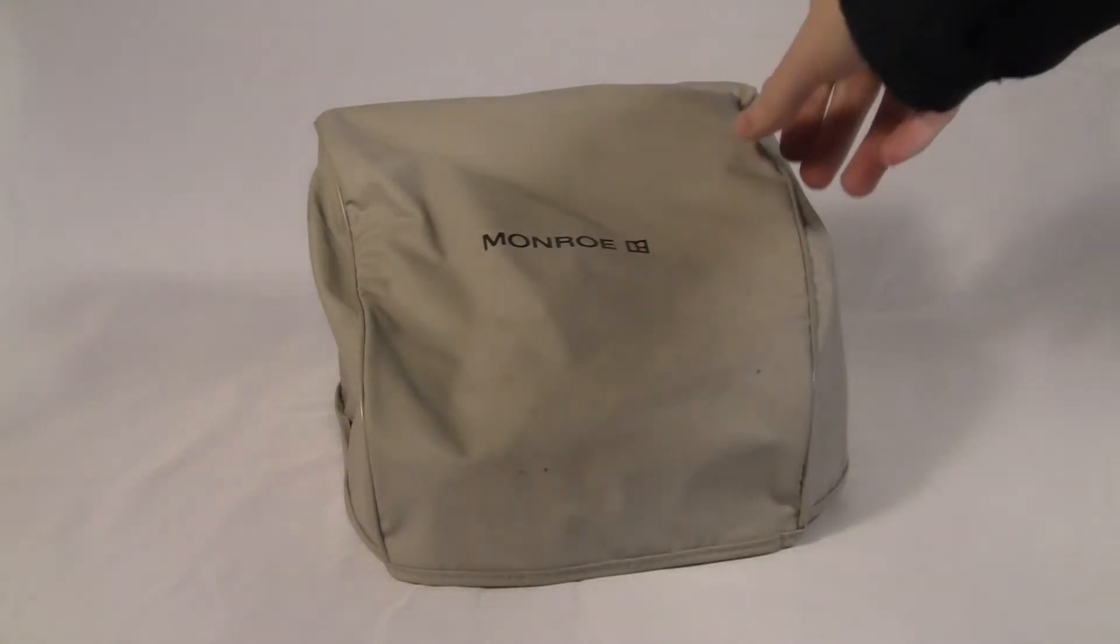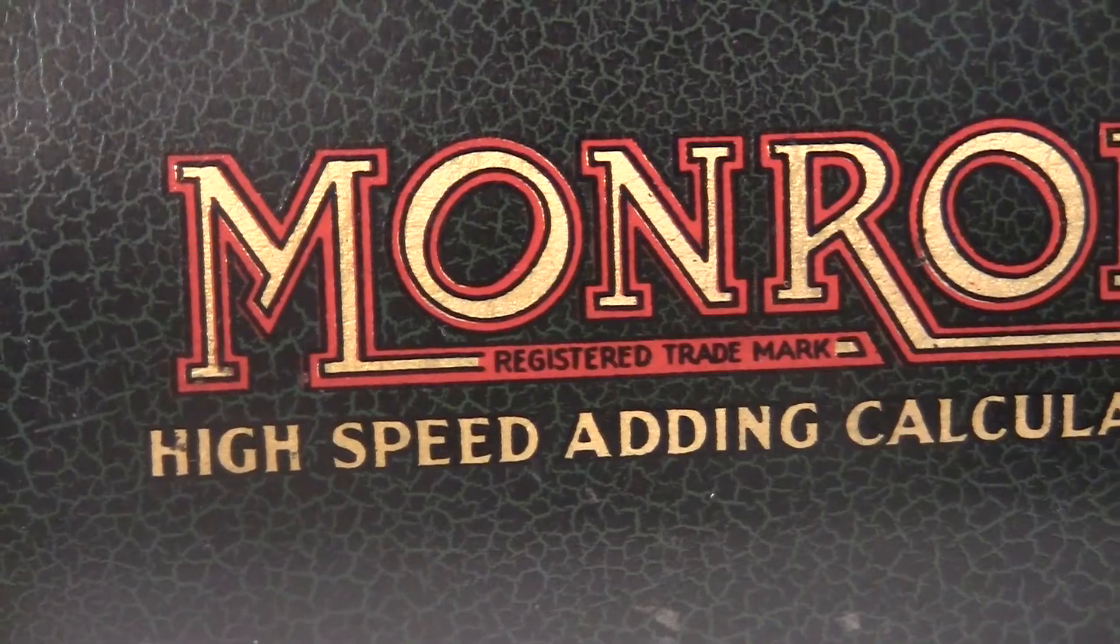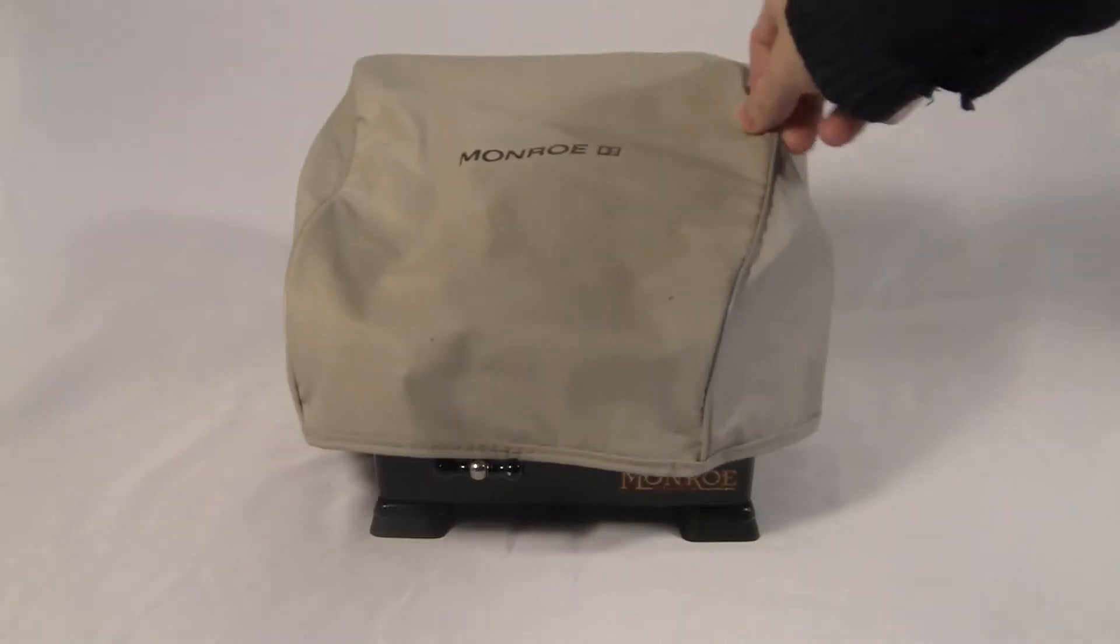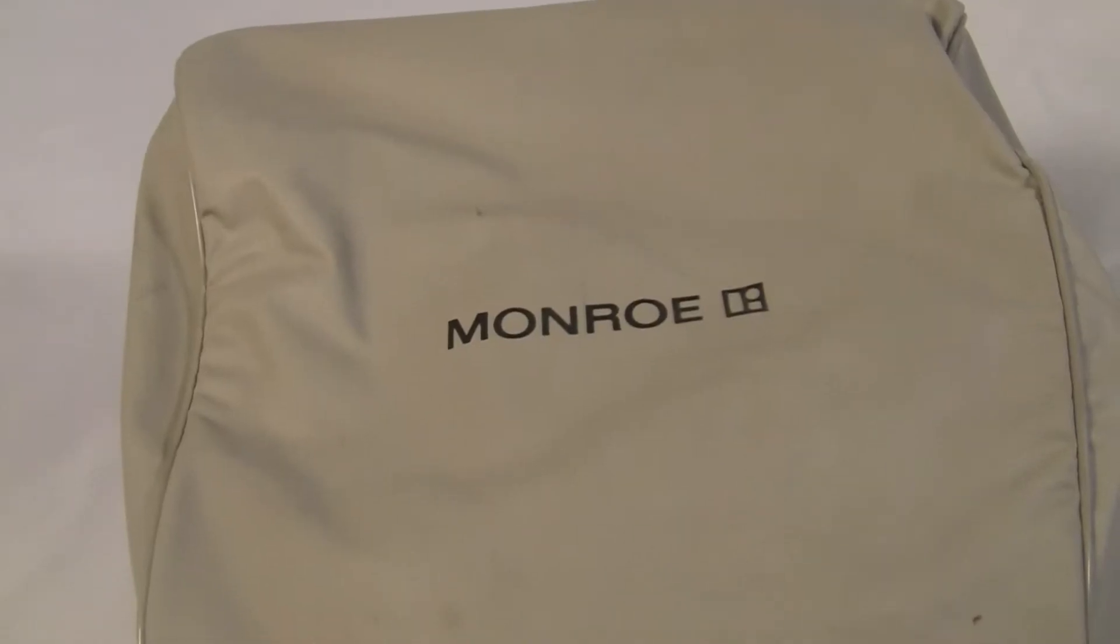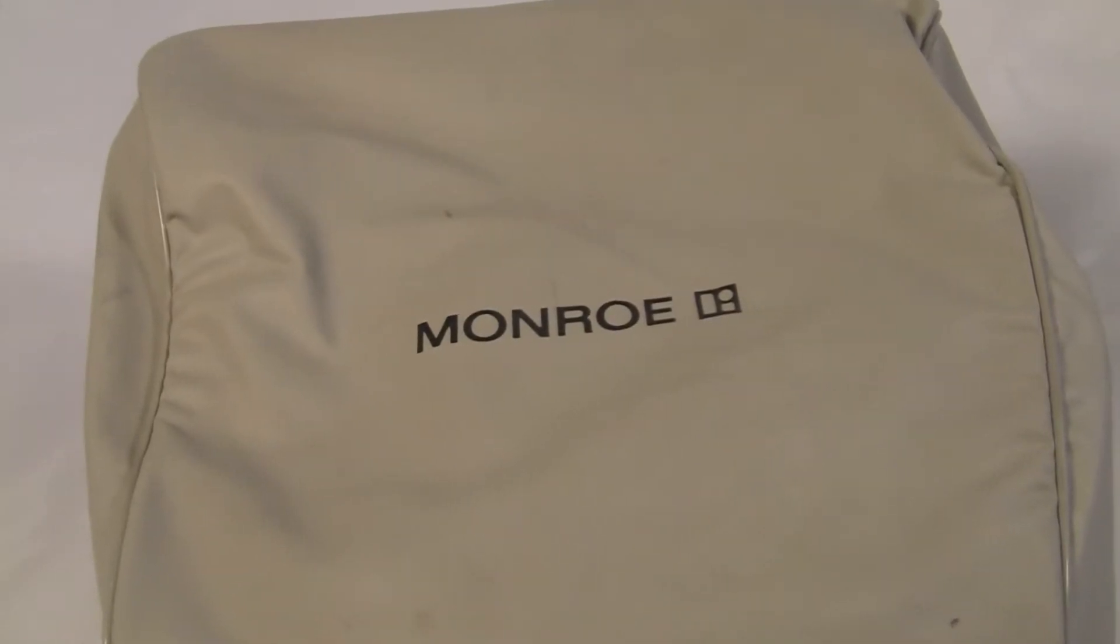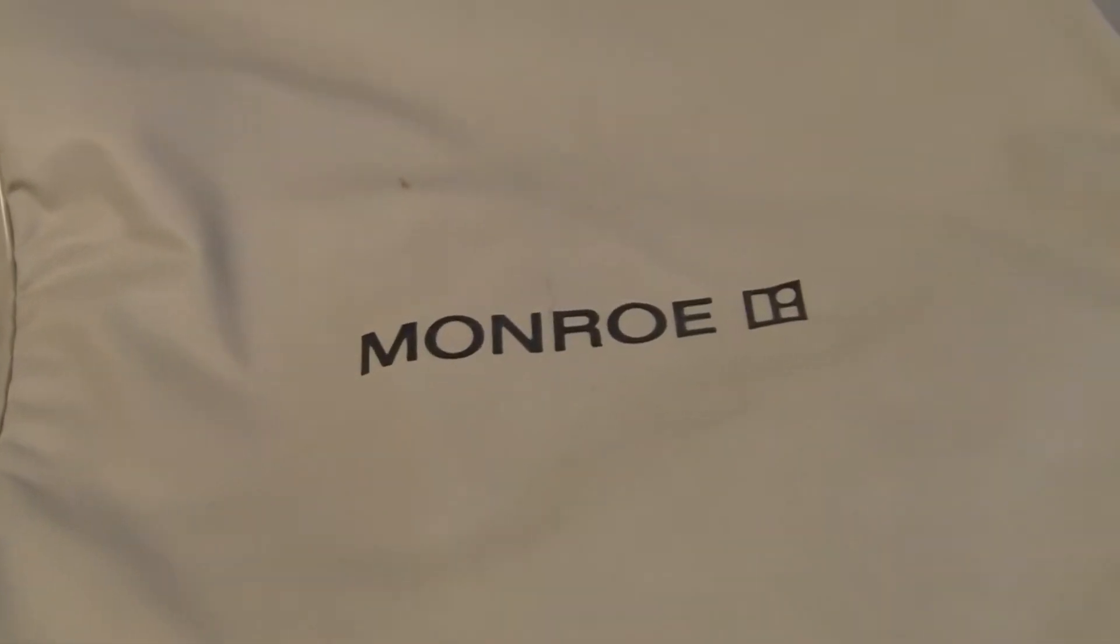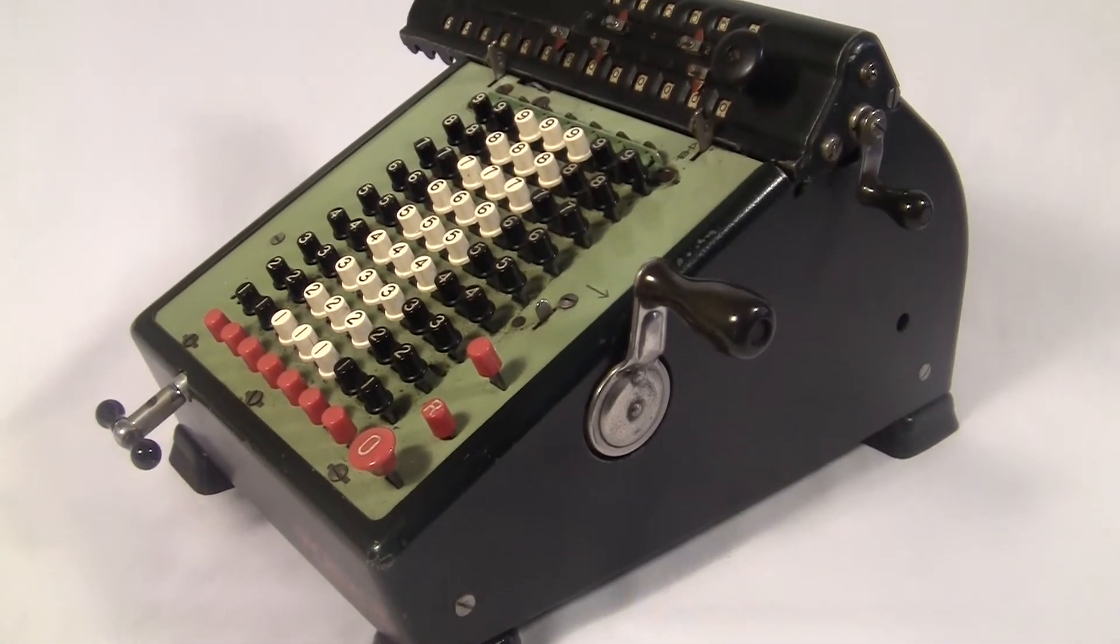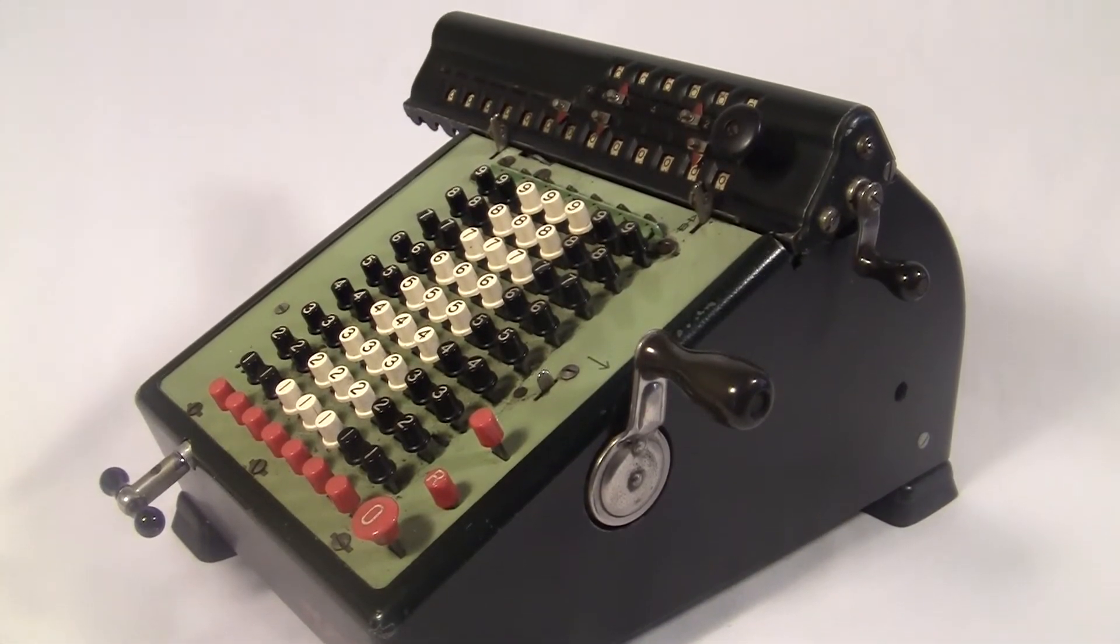Actually, this is a bit of a mystery. The machine has the old-style Monroe logo they were using in the 30s and 40s, but this vinyl cover can't be that old. The font on the cover is Helvetica. The R is a giveaway. Helvetica wasn't even created until 1957, so I'd say the cover's from the 60s at the earliest. So either the machine is actually not as old as I think, or the cover isn't the original. I'm not sure.